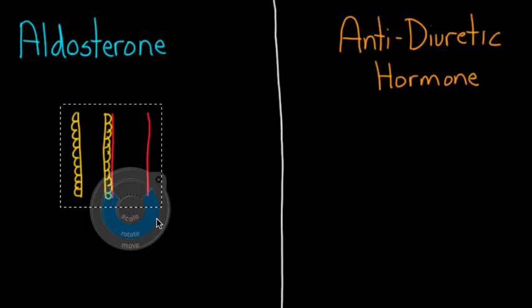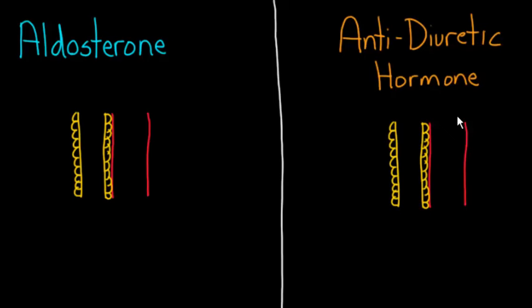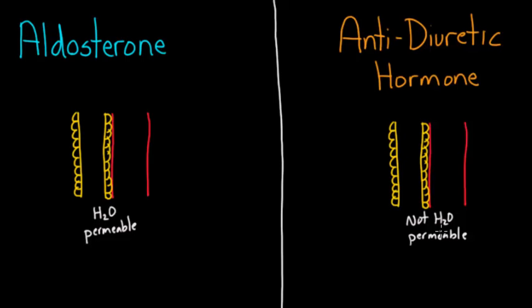In this tubule, we know that on one side — the aldosterone side — we have water permeability. So this layer of cells is water permeable. But over here on the ADH side, this is not water permeable. The reason it's different is because, although they look the same, these are different parts of the nephron.